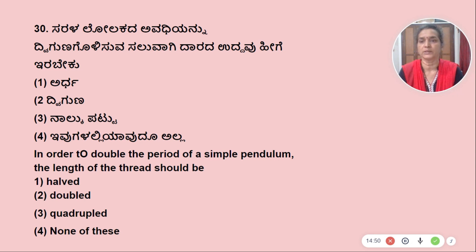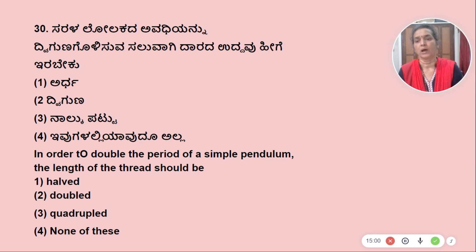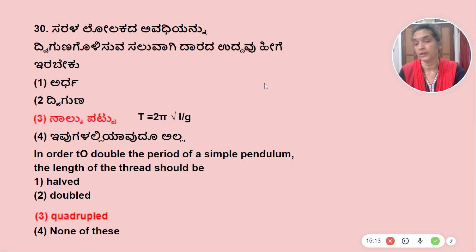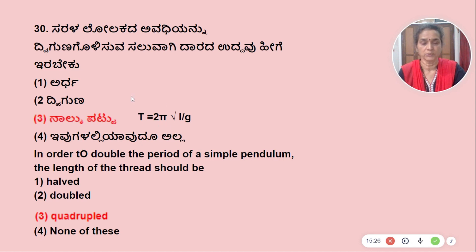In order to double the period of a simple pendulum, the length of the thread should be quadrupled. The parsec is referenced in relation to these measurement units.